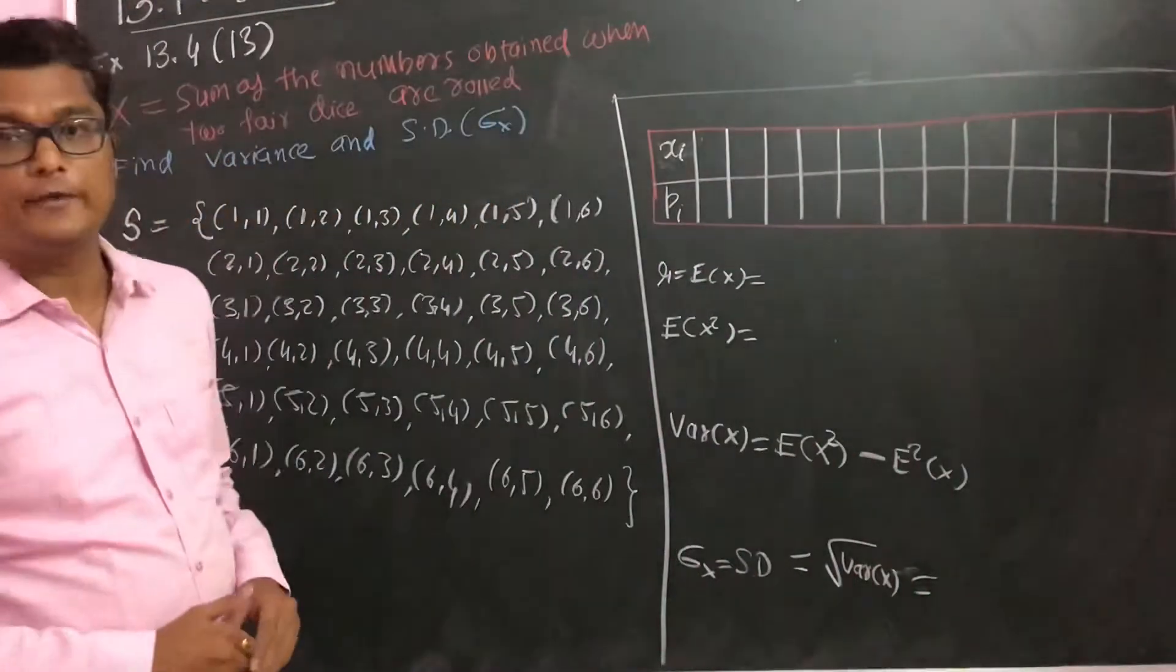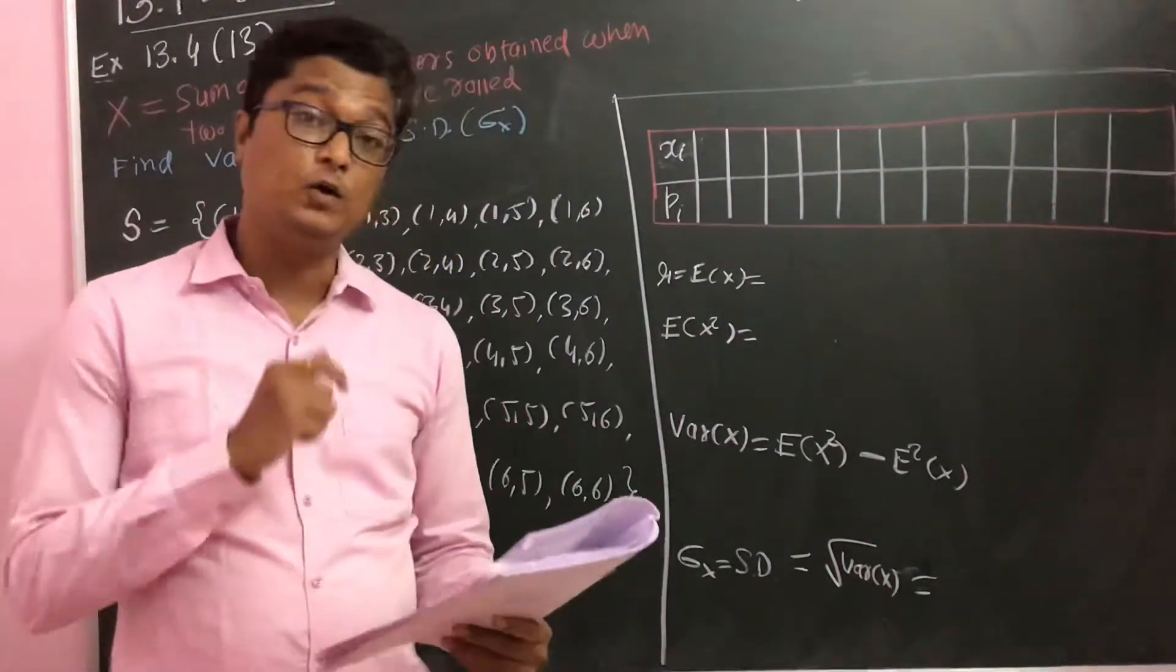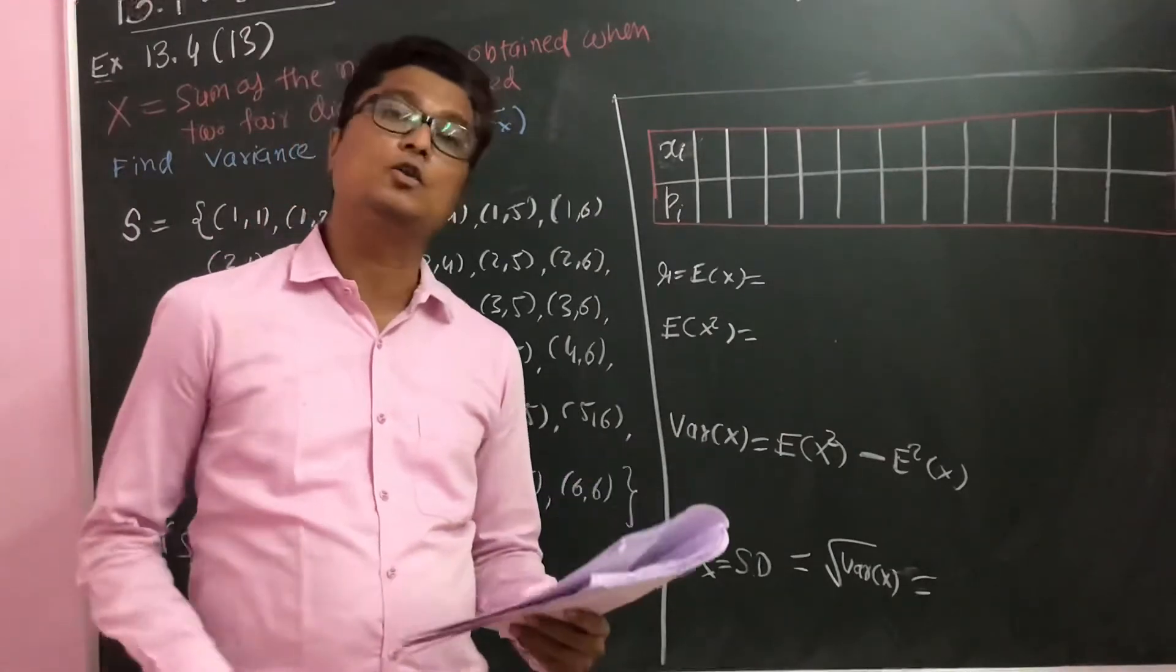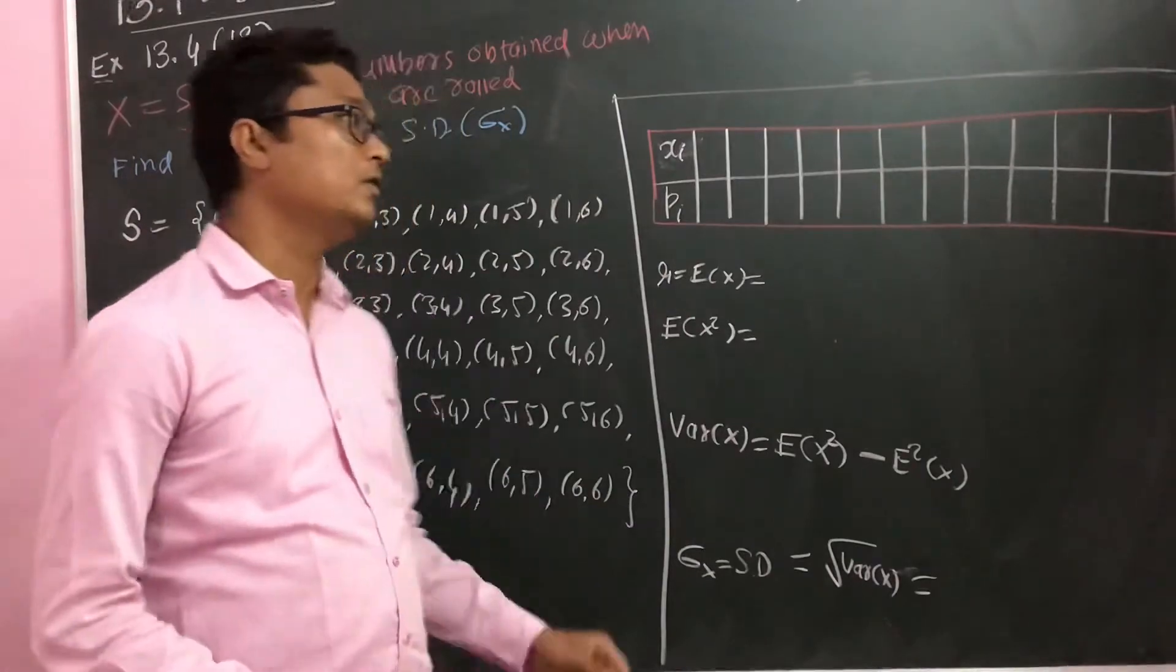Let's do problem number 13 of exercise 13.4. Let X denote the sum of the two numbers obtained when two fair dice are rolled. Find the variance and standard deviation of X.